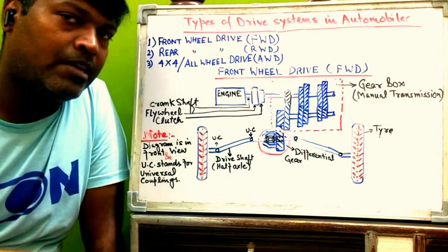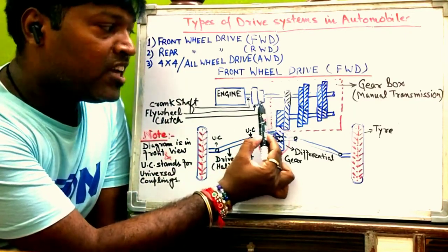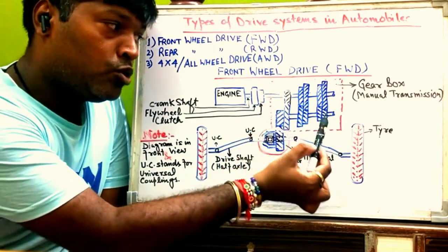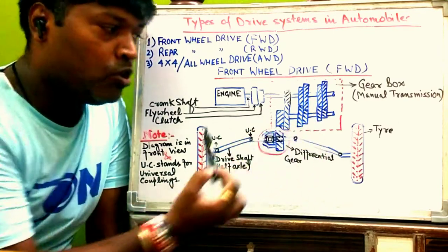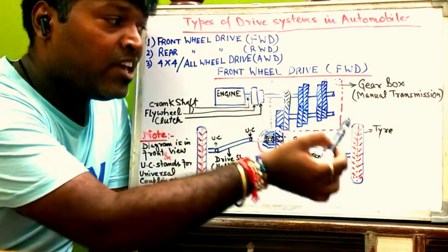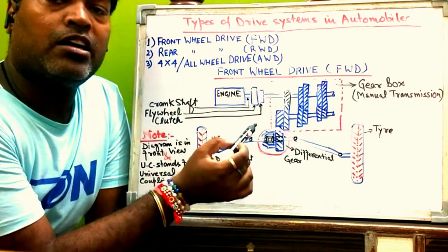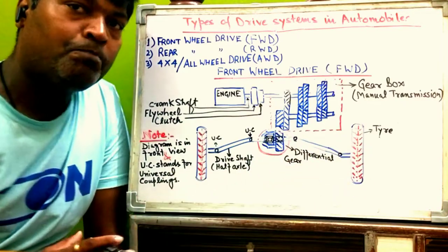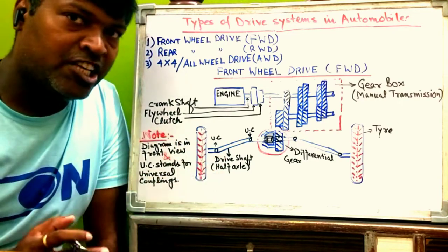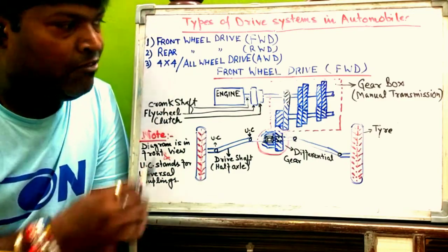Next to the flywheel is the clutch assembly. Whenever you press the clutch pedal, a gap is created between the flywheel and the clutch, so no power goes further from the flywheel to the gearbox. The clutch decides whether power is to be given in the forward direction or not. When the clutch pedal is released, it gets engaged again and power flows to the gearbox.